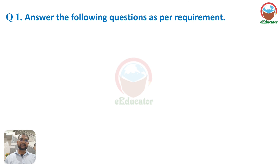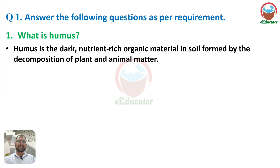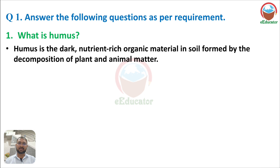Let's start discussions of this textbook exercise. Question number one: Answer the following questions as per requirement. Question one asks: What is humus? Humus is a dark, nutrient-rich organic material. It is formed in the soil by the decomposition of plant and animal material — branches and leaves of trees, roots, and animal bodies.